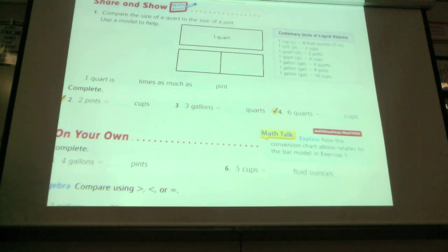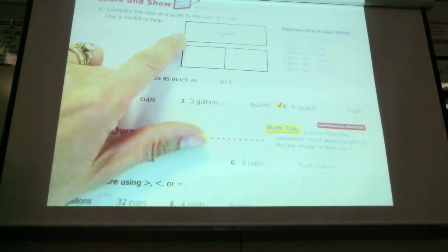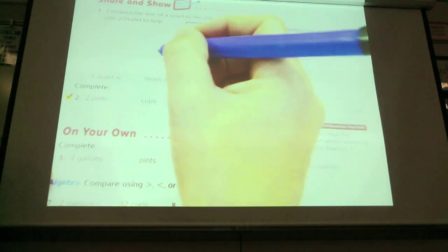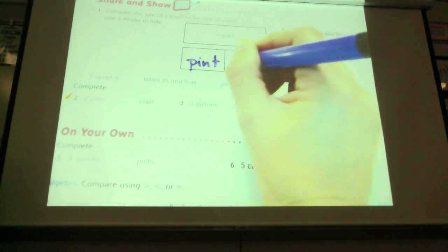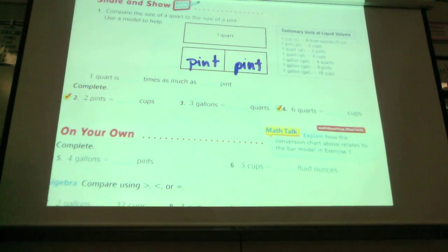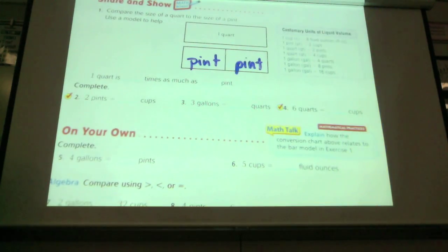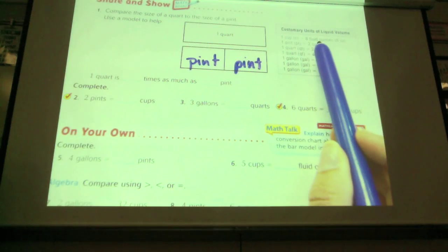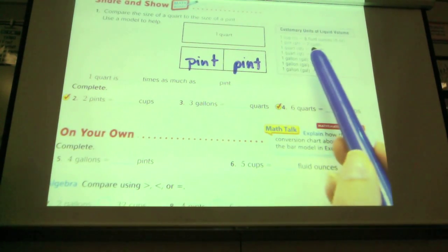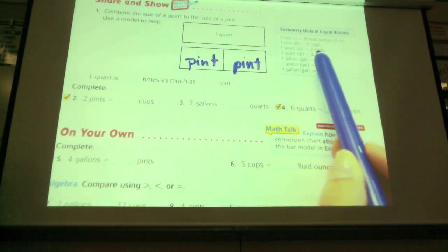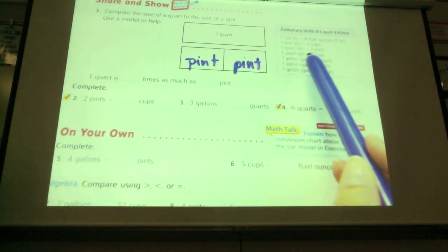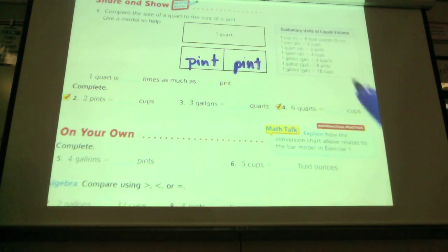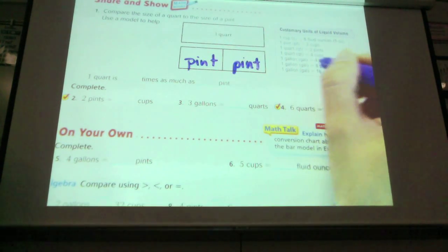Compare the size of a quart to the size of a pint. They've already shown you that one quart equals two pints. Now, here's another chart that shows all the customary units. Eight fluid ounces equals one cup. Two cups equals one pint. Two pints equals a quart. Two quarts equals a half gallon. Two half gallons equals a gallon.